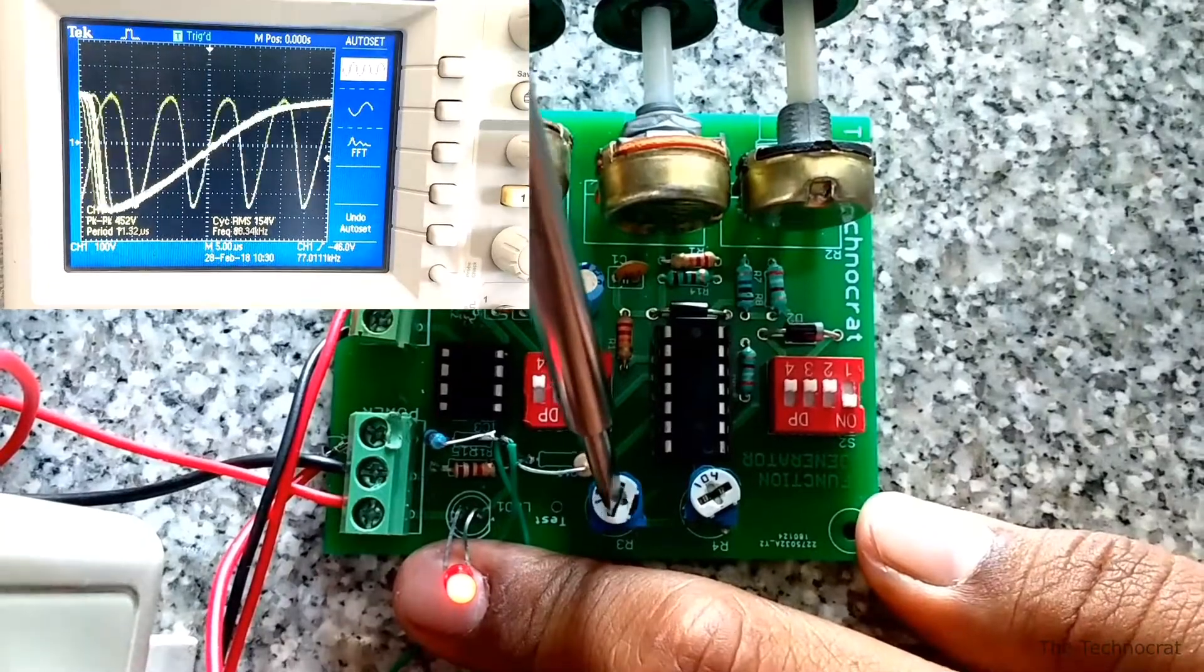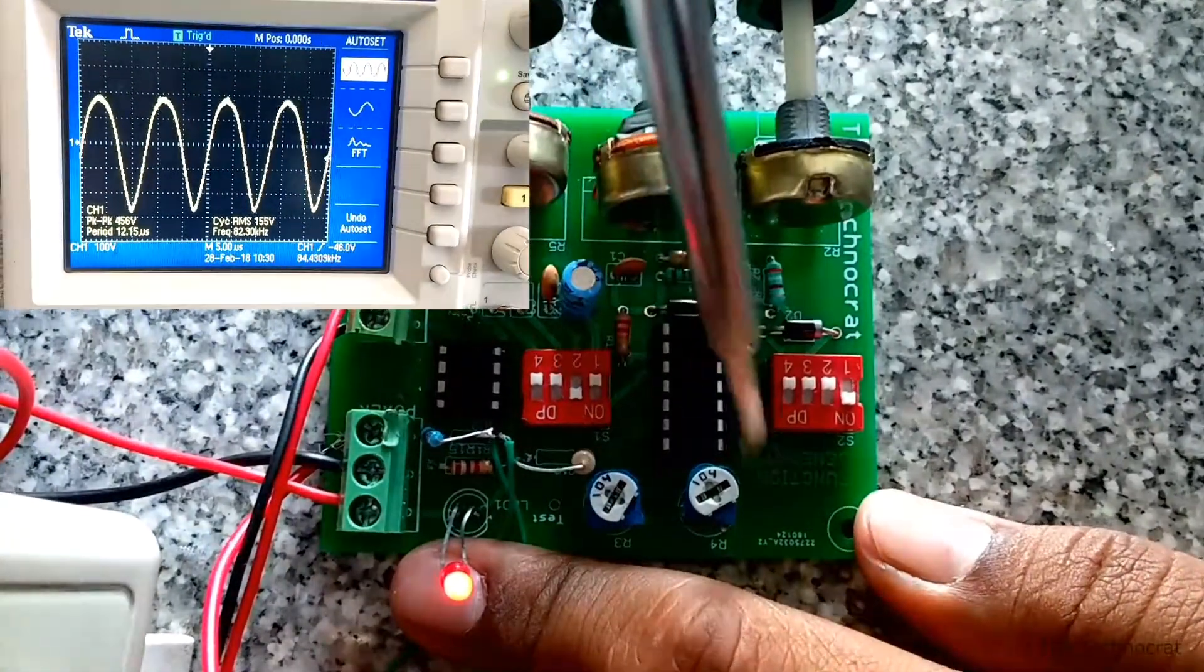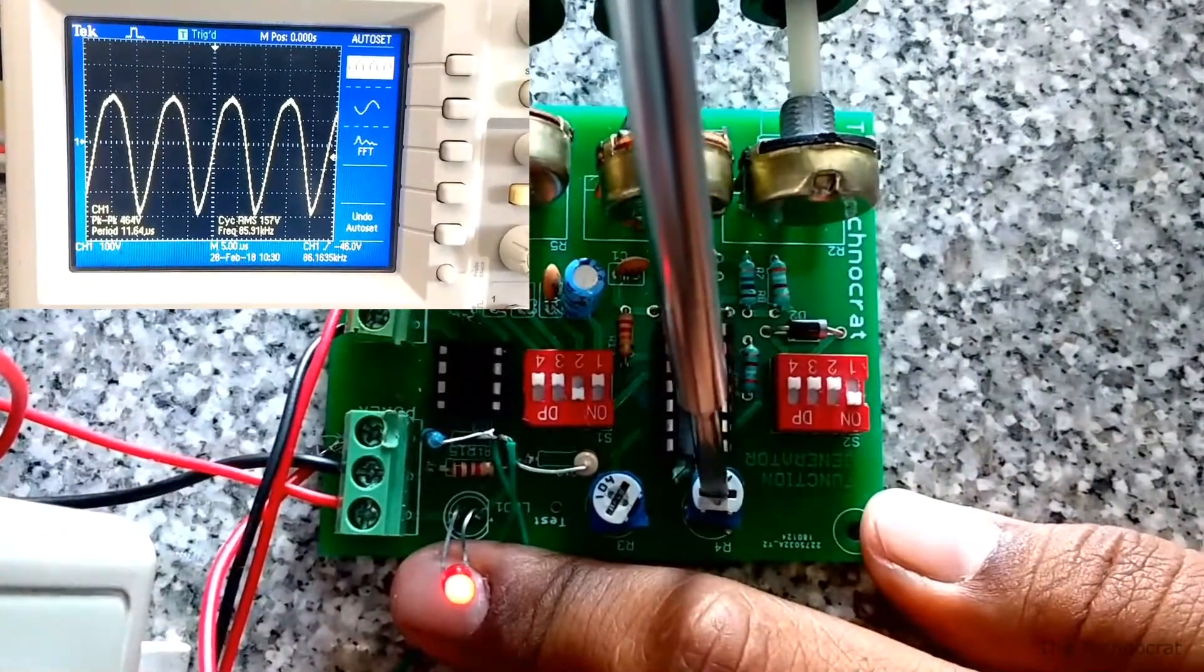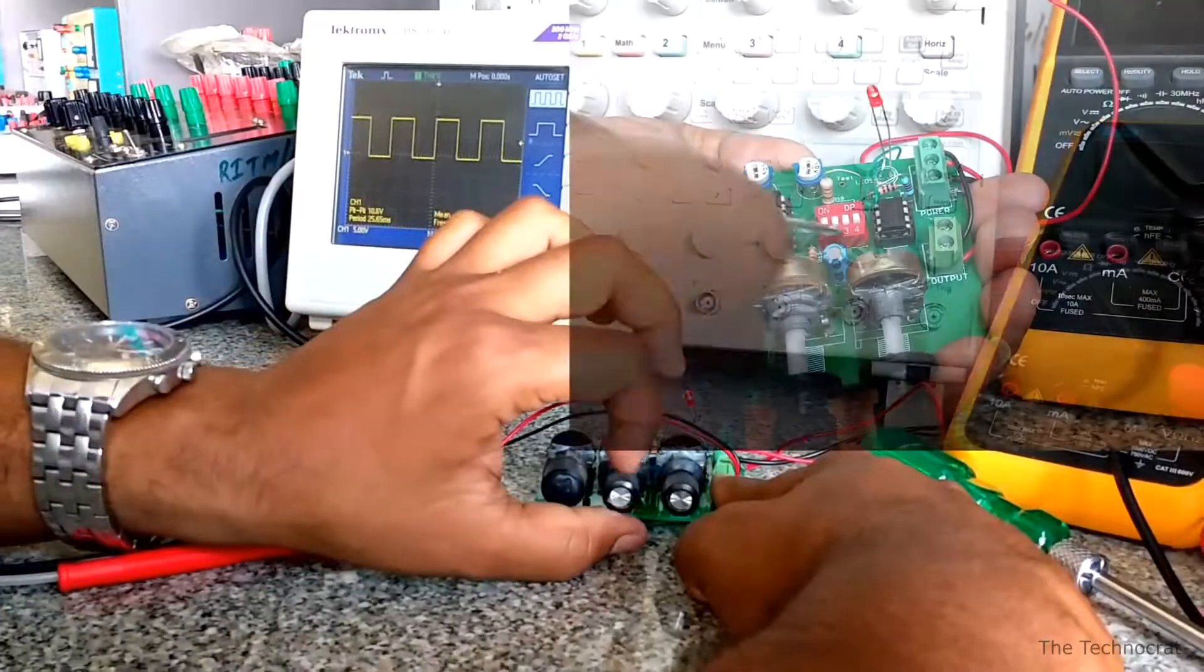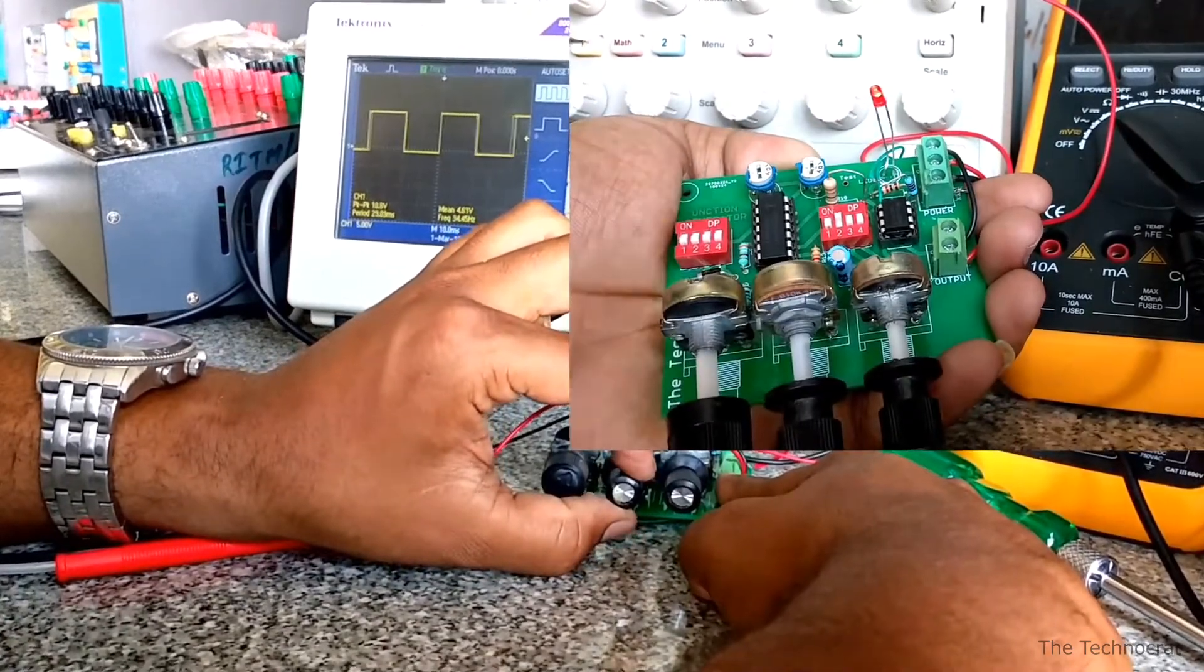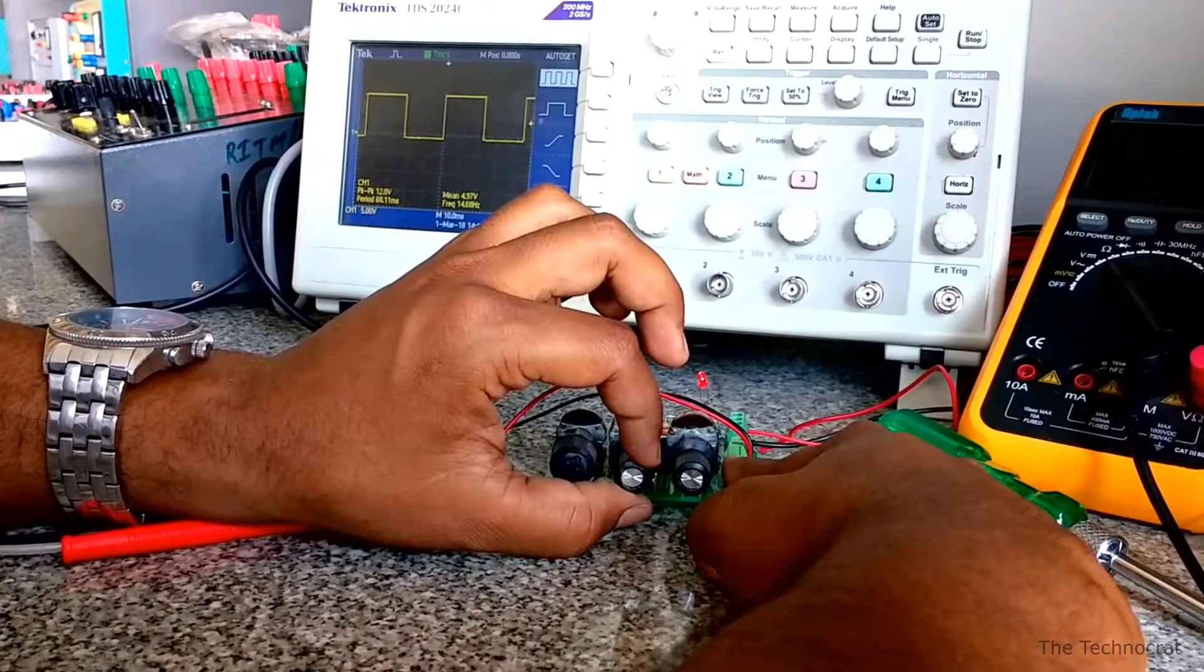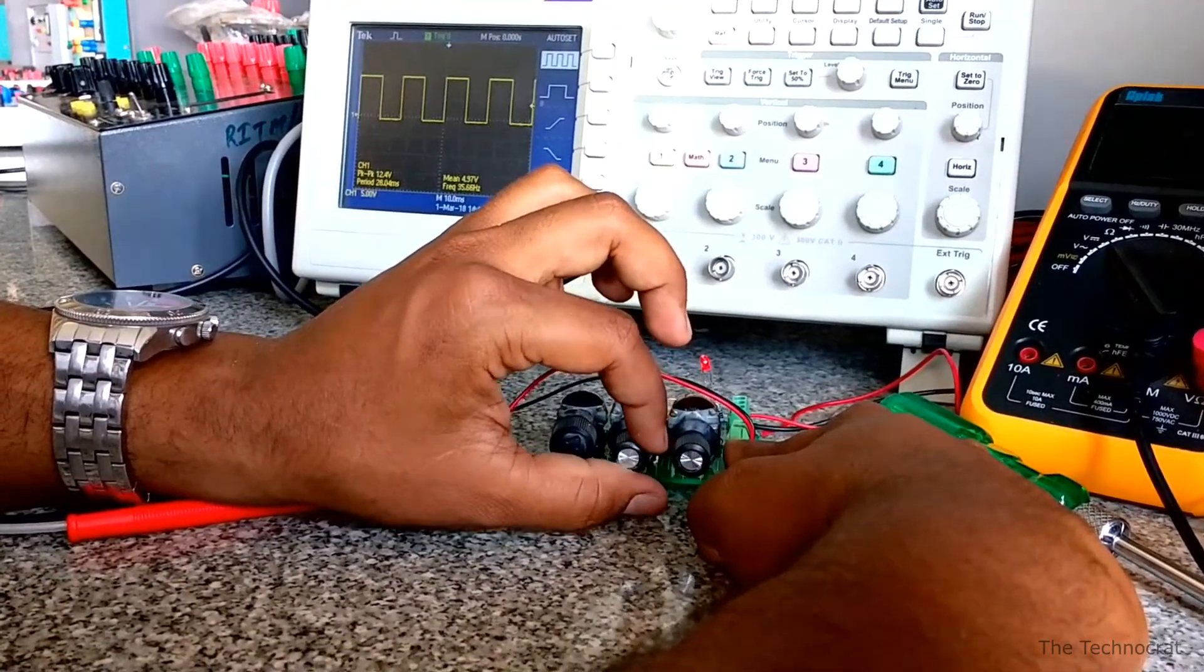Vary the position of 100kΩ presets to get the sine wave with minimum distortion. Select the frequency multiplier switch according to the required frequency range. Vary the 10kΩ potentiometer to change the frequency of the signal to accurate value.